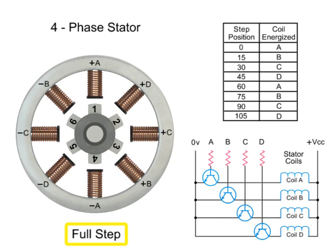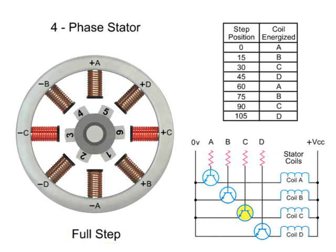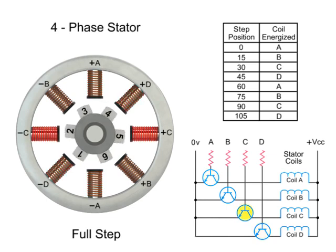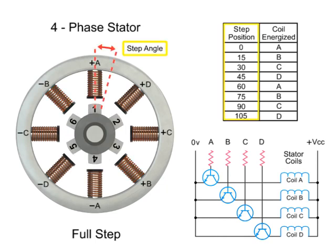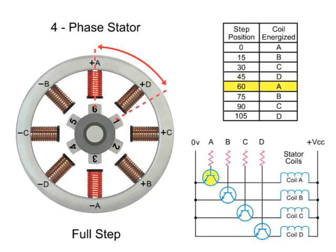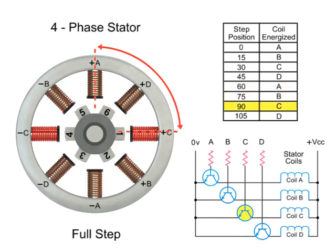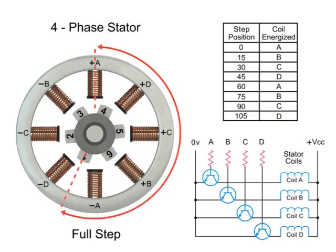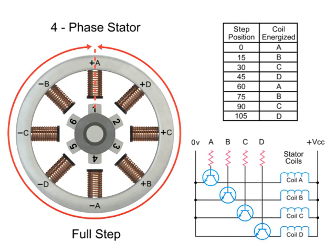For full-step mode operation, energizing each set of coils sequentially, the rotor can be made to rotate or step from one position to the next by an angle determined by its step angle. Shaft rotation is achieved by energizing both windings while reversing the current alternately — switching coils A, B, C, D one coil at a time repetitively will rotate the rotor in the forward direction. In this example, there are six steps arranged on the rotor 60 degrees apart, and 24 steps are required to make a full rotation at 15-degree increments.